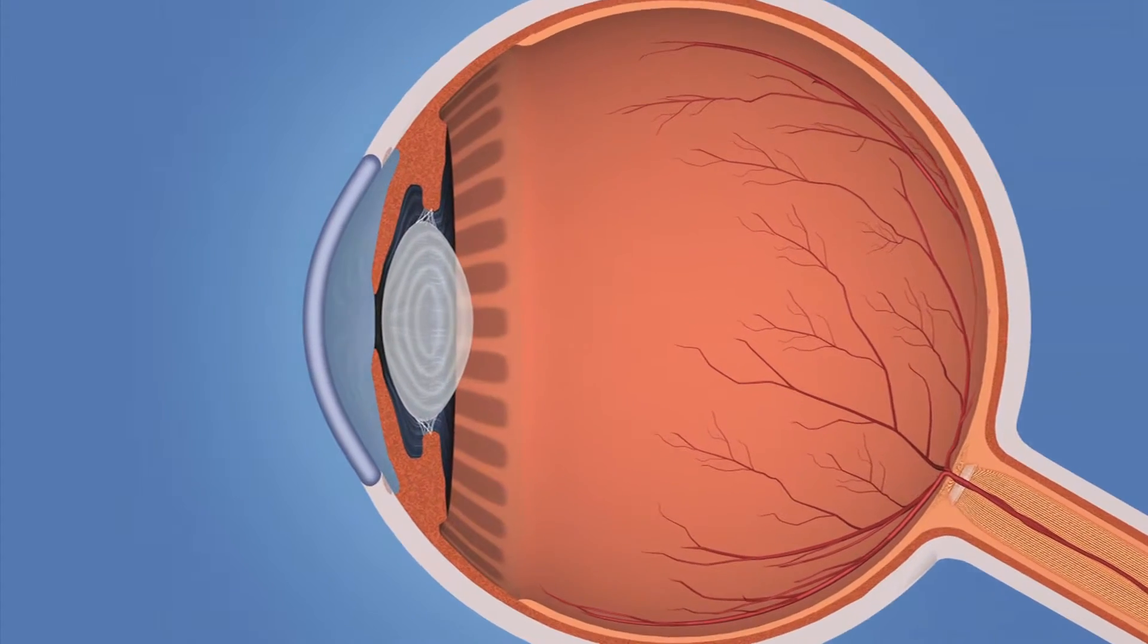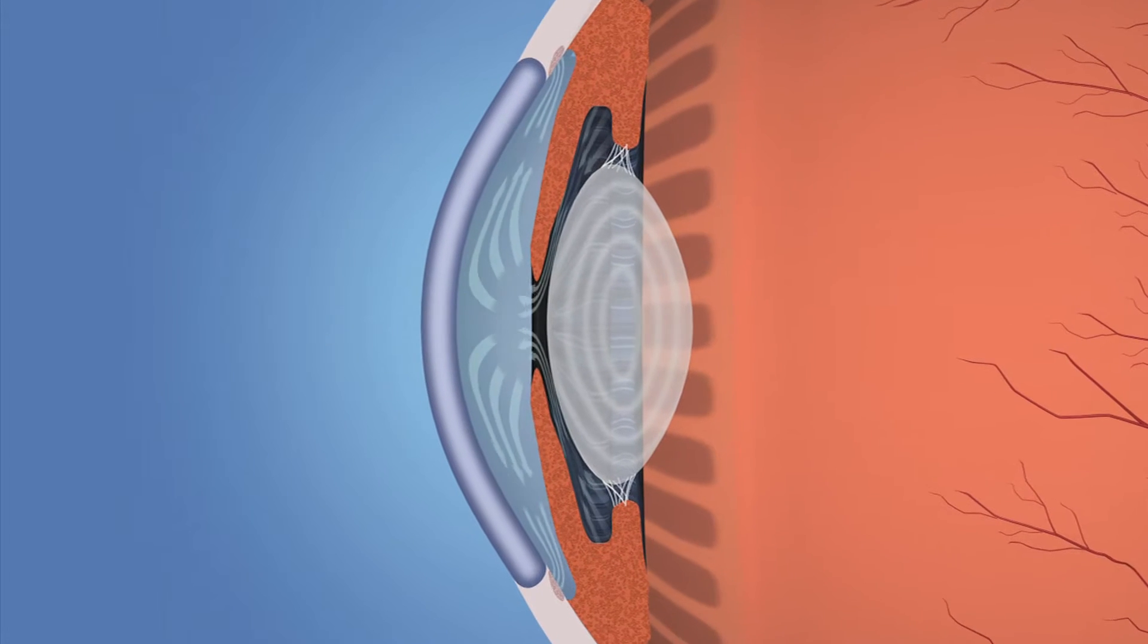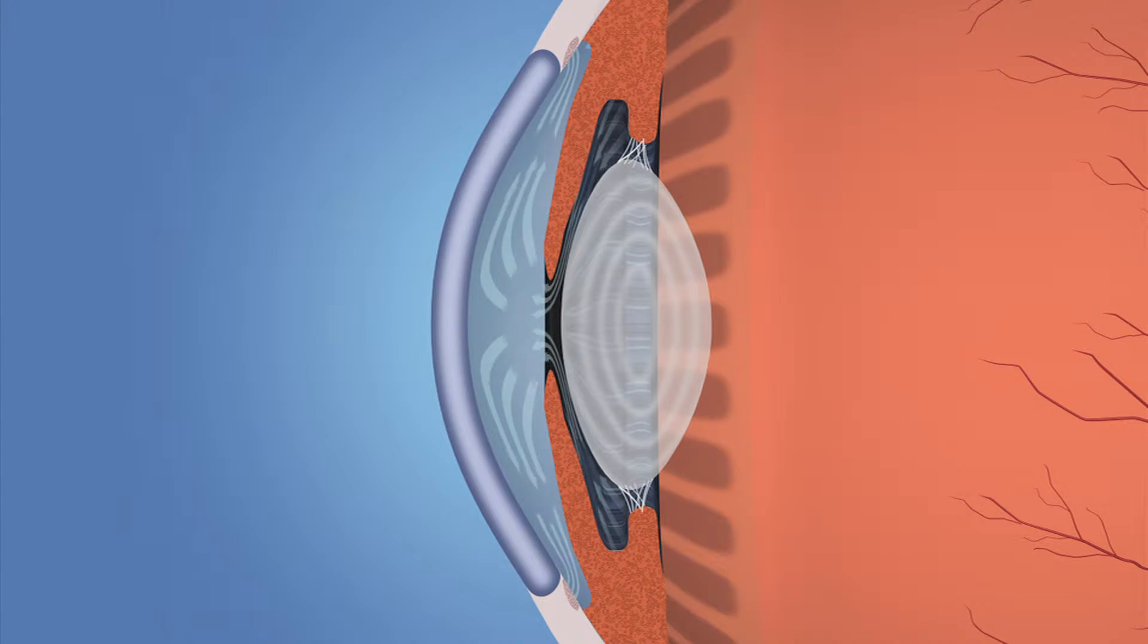In the healthy eye, a clear liquid called aqueous humor circulates inside the front portion of the eye.